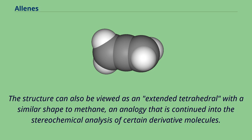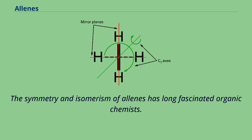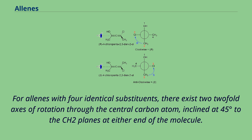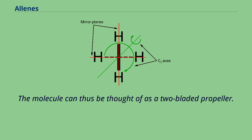An analogy that is continued into the stereochemical analysis of certain derivative molecules. The symmetry and isomerism of allenes has long fascinated organic chemists. For allenes with four identical substituents, there exist two twofold axes of rotation through the central carbon atom, inclined at 45 degrees to the CH2 planes at either end of the molecule. The molecule can thus be thought of as a two-bladed propeller.